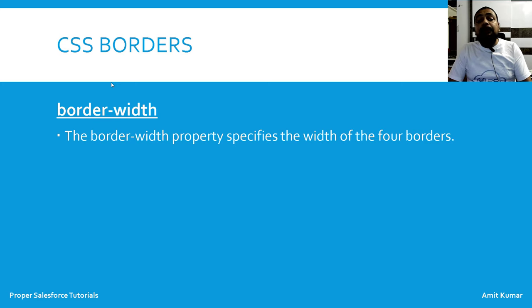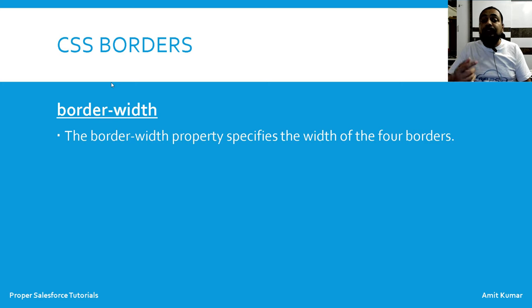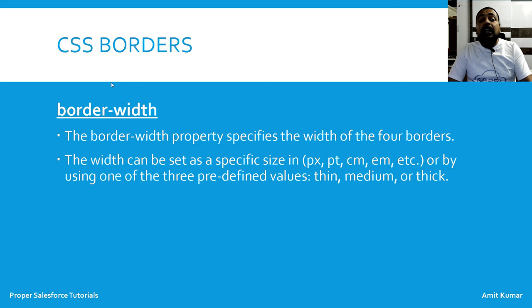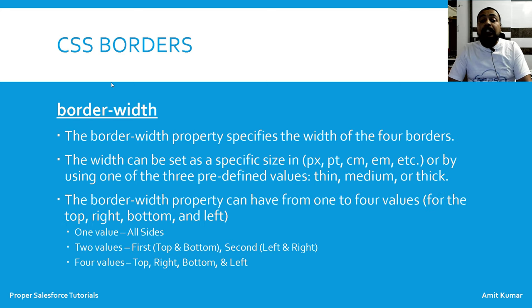The border-width property specifies the width of the four borders — top, bottom, left, and right. The width can be set using a specific size in pixels, points, or centimeters, or by using one of the predefined values: thin, thick, or medium.